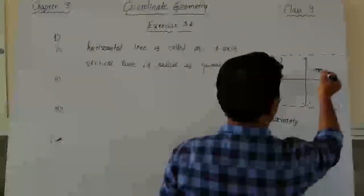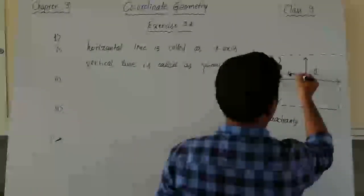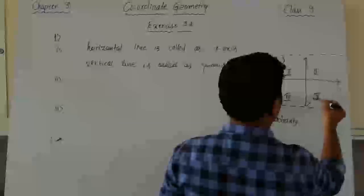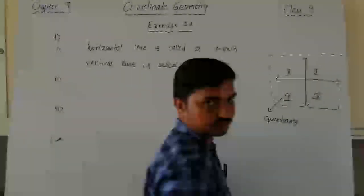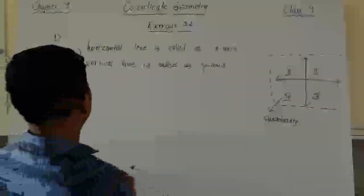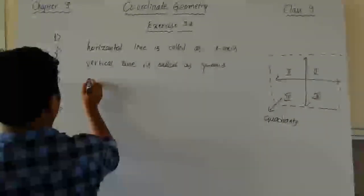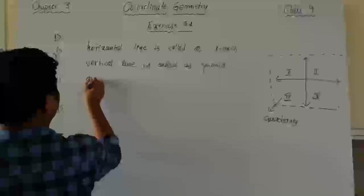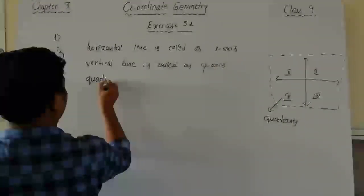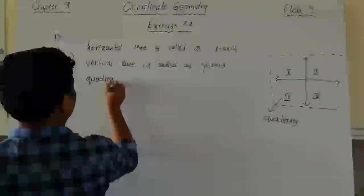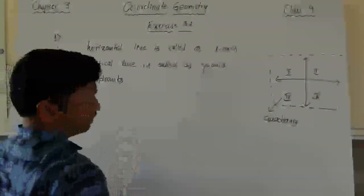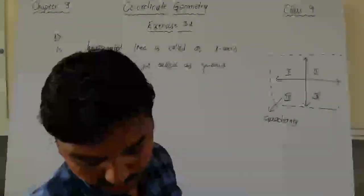The quadrants are numbered first, second, third, and fourth. So the answer to the second sub-question is simply: each part is called a quadrant. Now moving to the third sub-question.